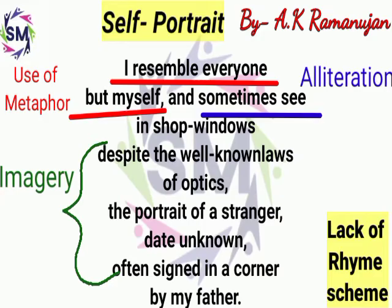The image of a stranger ties back to the touchstone line: 'I resemble everyone but myself.' A metaphor is used in this line, which has been highlighted in red color. After that, alliteration is used — 'and sometimes cease' — when there is repetition of alphabet sounds, alliteration is used. In 'shop windows,' 'despite,' and 'well-known laws of optics,' 'the portrait of a stranger, date unknown, often signed in a corner' — imagery is used here, presented in a real-life situation. If we talk about rhyme scheme, as told earlier, there is no rhyme scheme in this poetry.